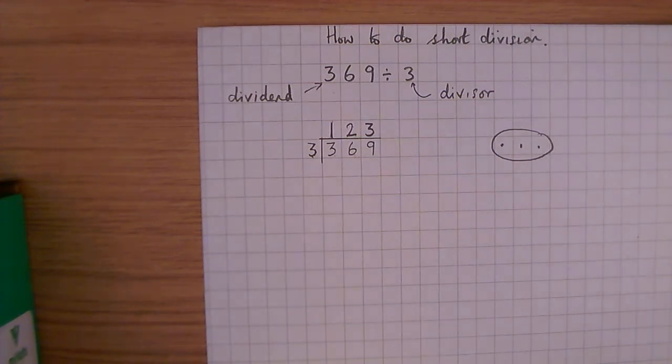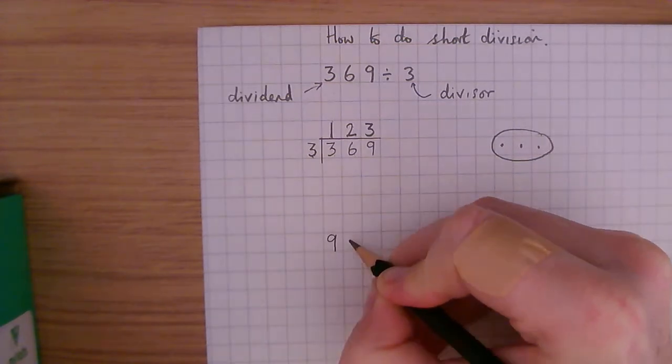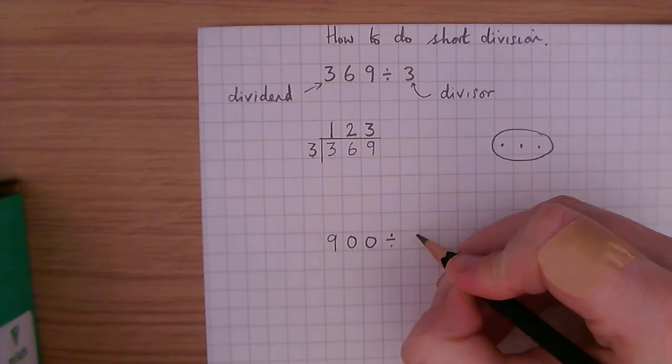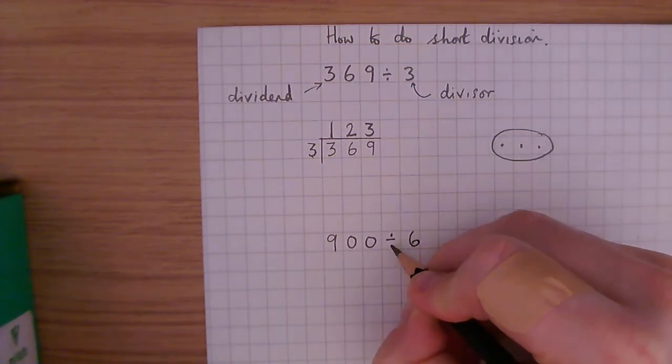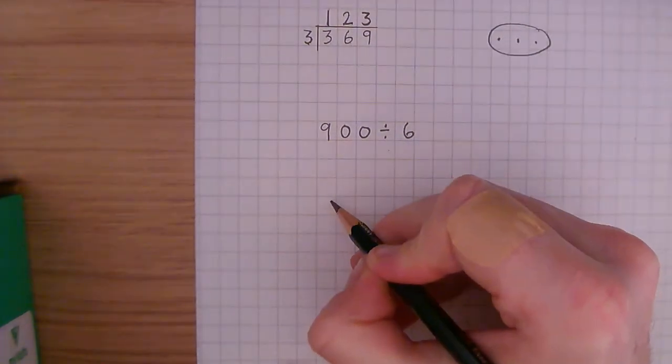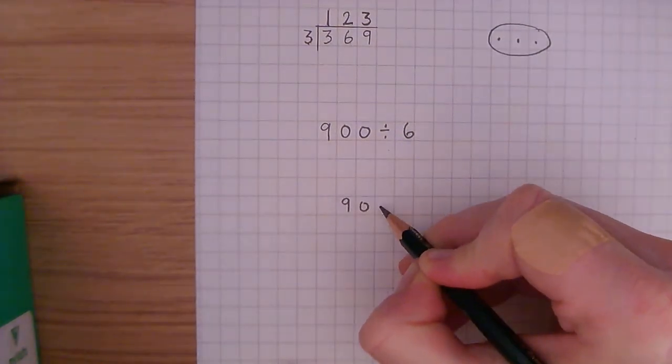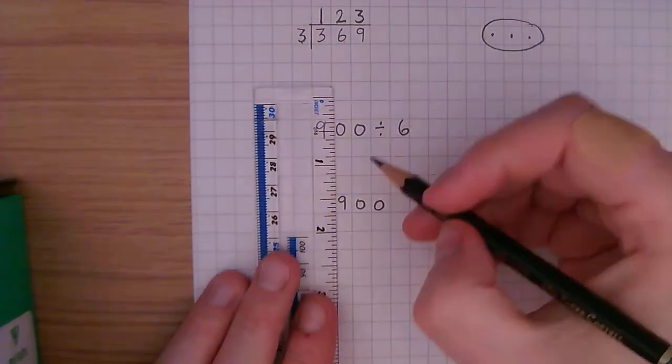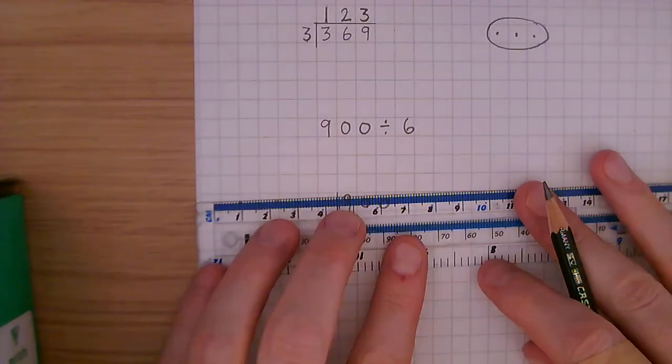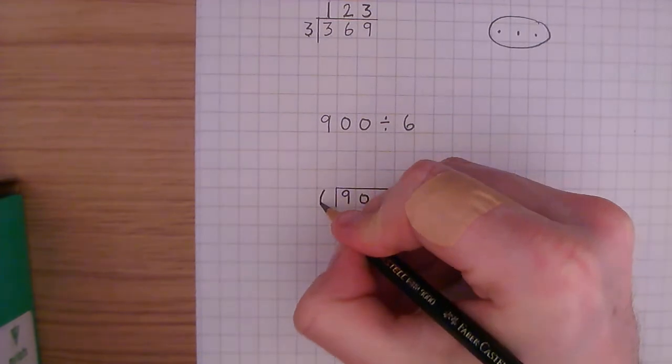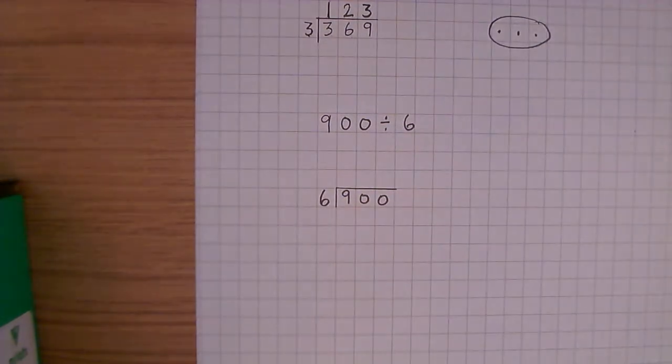Let's look at a question that involves a remainder. 900 divided by 6. So we're going to write our 900 here, and we're going to draw our bus stop. And our 6, which is our divisor, is going to go on the outside. Same as before.